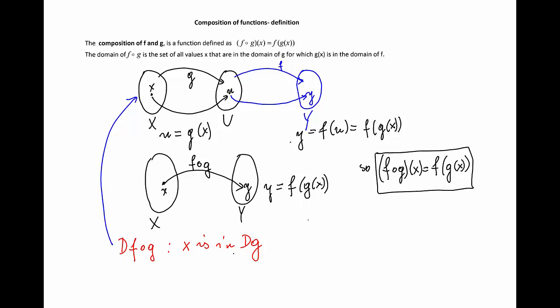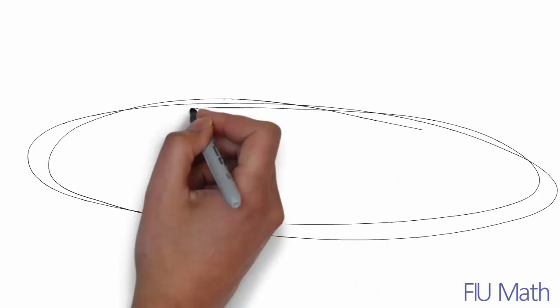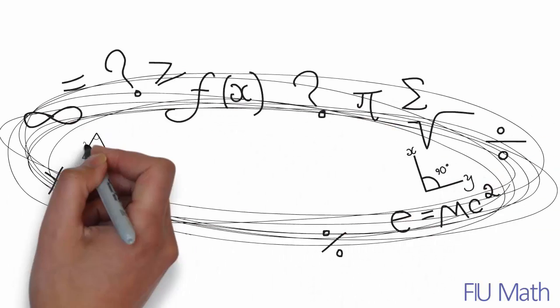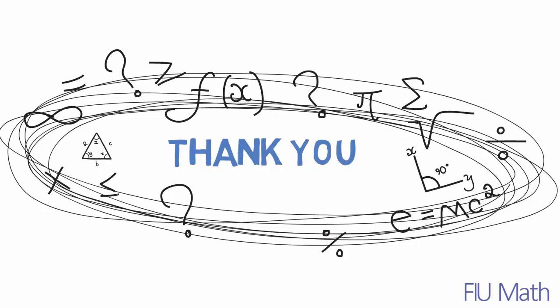But now the function f has to take the value of u and assign to that a value of y. That means that g of x, which is u, must be in the domain of the function f.